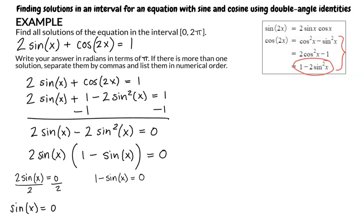Dividing 2 from both sides of the equation, we write sine of x equals 0. Adding sine of x to both sides of the equation, we write sine of x is equal to 1.